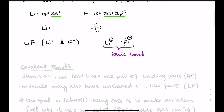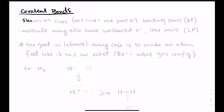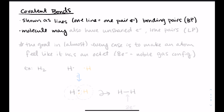We will not really focus on ionic bonds. The focus of what we do is going to be on putting together covalent bonds in proper structures for how atoms are connected to each other in molecules. For a covalent bond, we show the bonds as lines — one line means one pair of electrons, so two electrons shared between those atoms. We call these bonding pairs. The molecule might also have unshared electrons, and we call these lone pairs. Lone pairs look like what we saw in the Lewis symbols: dots around atoms that are not shared with another atom.